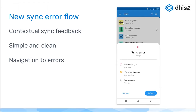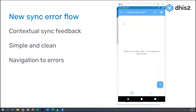If you are on the home screen, we don't give you a lot of details. We give you more details as you get inside the program or inside the tracked entity instance. However, it looks simpler and cleaner now in the new version. Most importantly, it lets the user navigate from the home screen directly to the specific error.